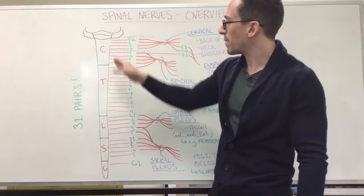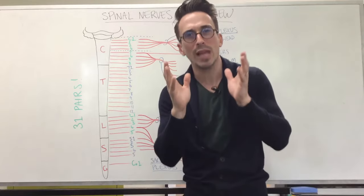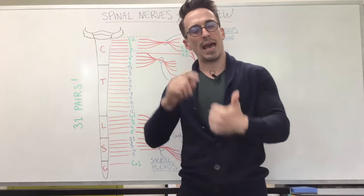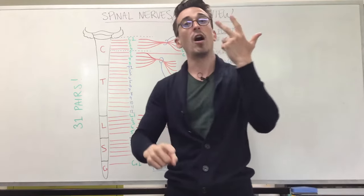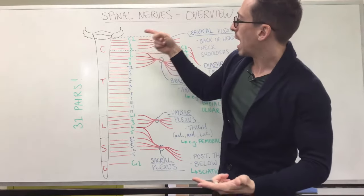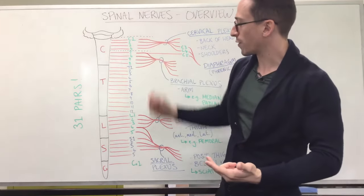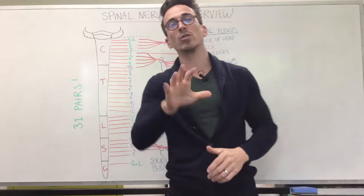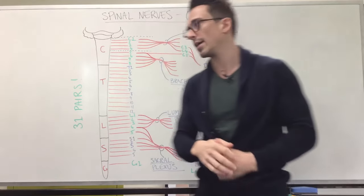Now, how do you remember these particular numbers? Well, think about the times that old people eat. Old people like to eat at 8am, 12pm and 5pm. Therefore, eight cervical, 12 thoracic, five lumbar and there's also going to be five sacral on top of that. All right, let's have a look at the nerve plexuses.